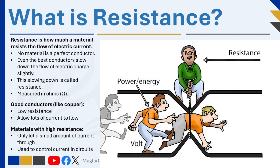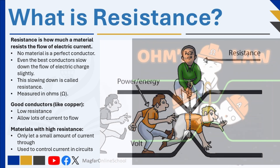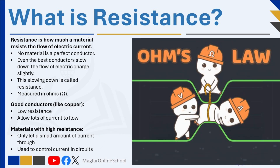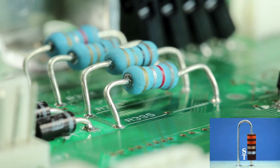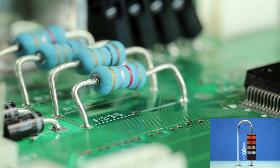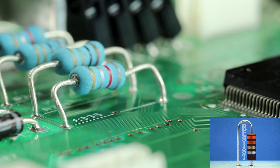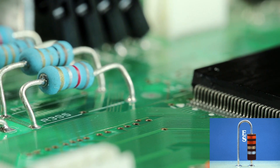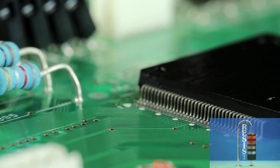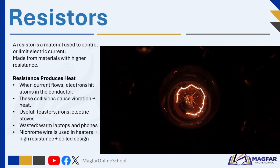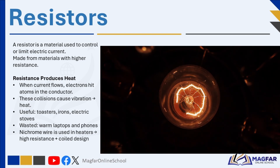A good conductor, like copper, has low resistance and allows a lot of current to pass through. A material with high resistance allows only a small amount of current to flow. Some materials are specially chosen for their resistance and are used to control the amount of current in a circuit — these are called resistors. A resistor consists of conductive material with higher resistance to control and slow down the current, or to convert electrical energy into other forms like heat or light. The filament inside a light bulb, made of very thin tungsten wire, resists the current so much that it heats up and produces light.